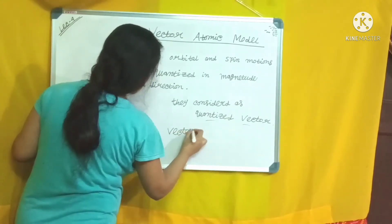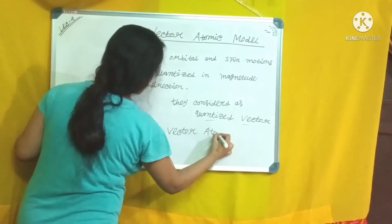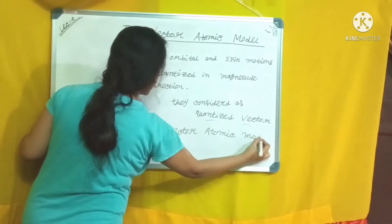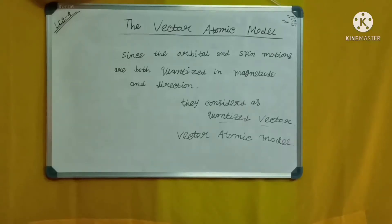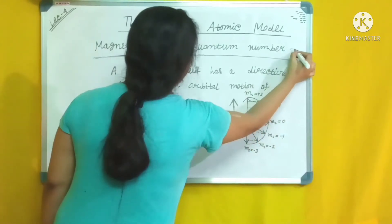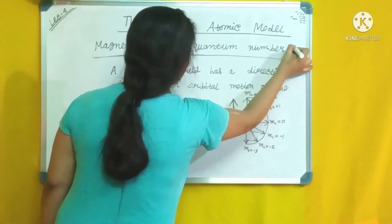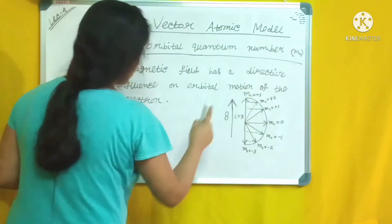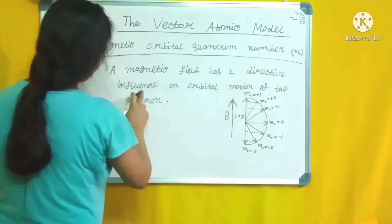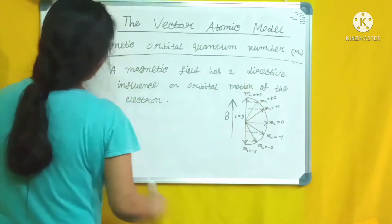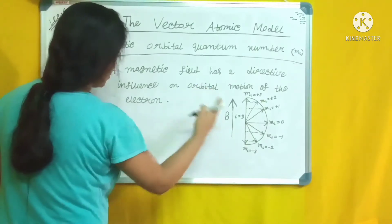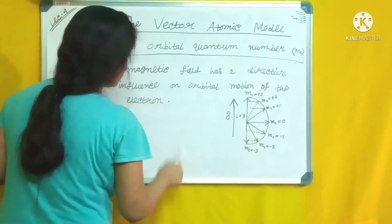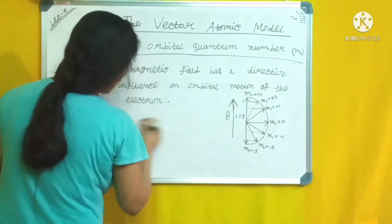The model we get depending on these quantized vectors is called the Vector Atomic Model. Now, regarding the magnetic quantum number ml: a magnetic field has a directive influence on the orbital motion of the electron, so in an external magnetic field, pl can orient only in certain directions.